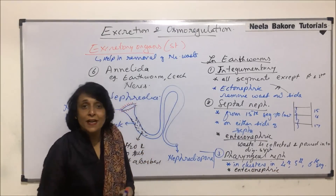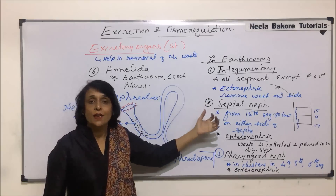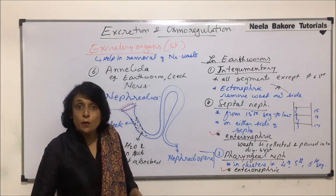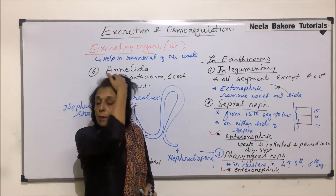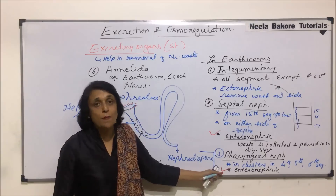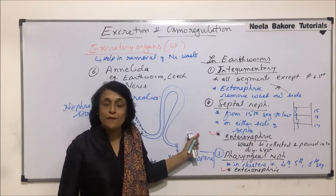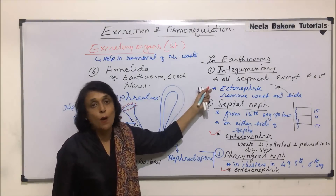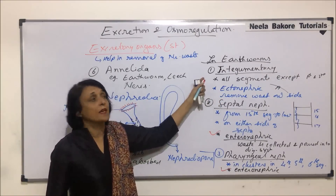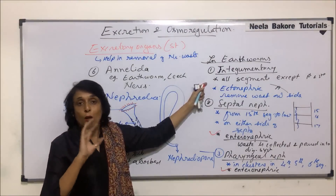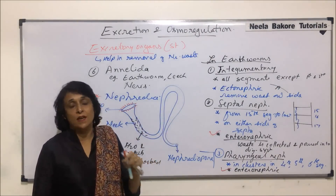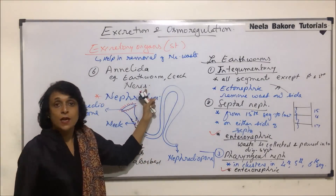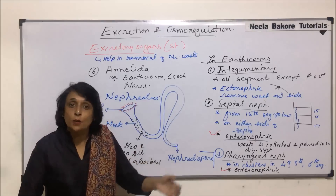So out of the three types of nephridia, one is ectonephric — the integumentary nephridia — which throws waste material directly outside the body. The other two, septal and pharyngeal, are enteronephric — they collect waste from the body and pour it into the alimentary canal. The integumentary nephridia are found in all segments except the first, second, and last anal segment. In Nereis, all nephridia are ectonephric.